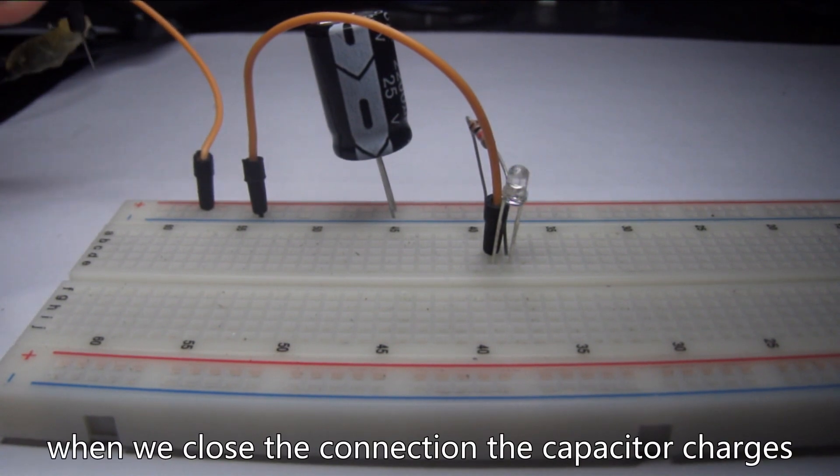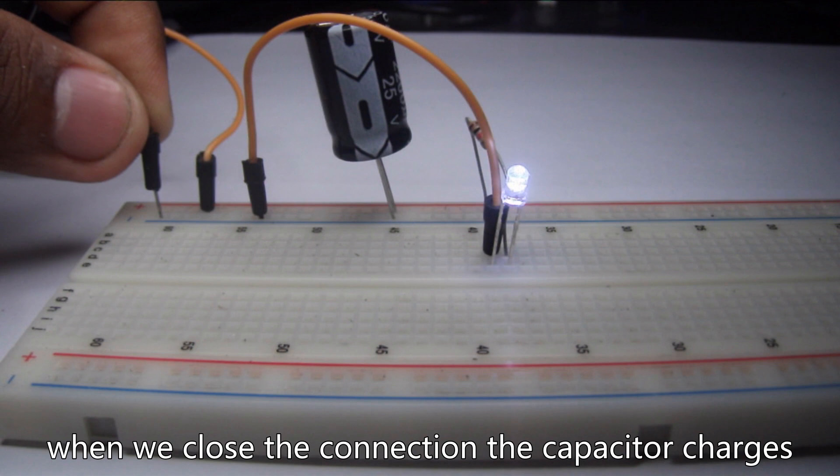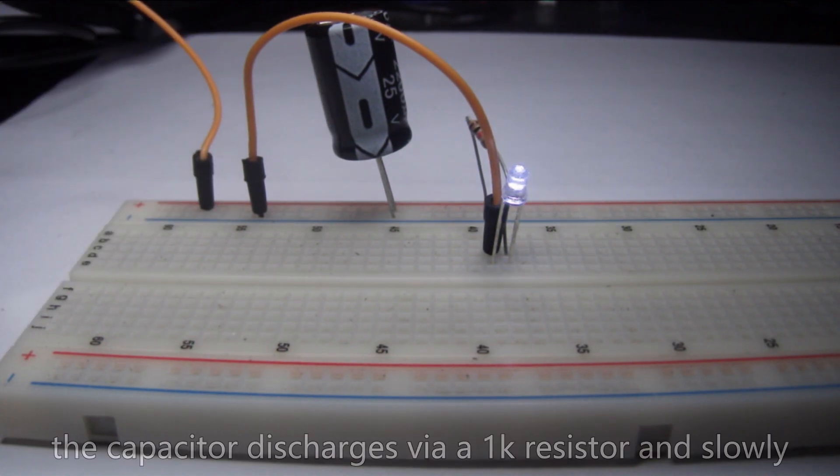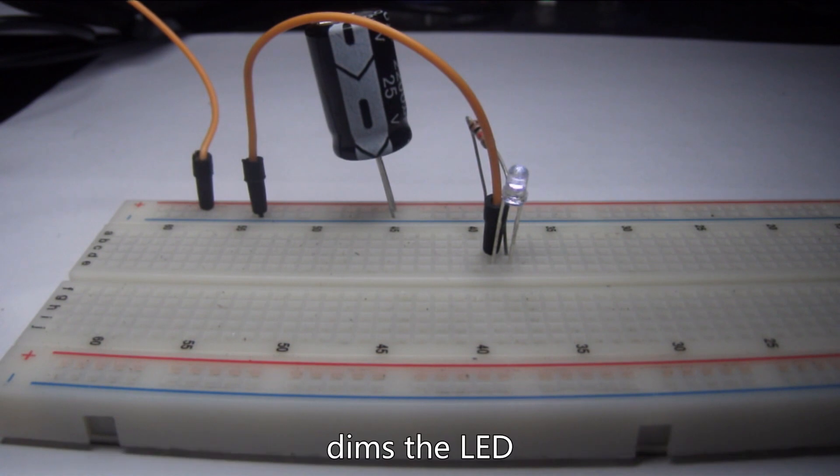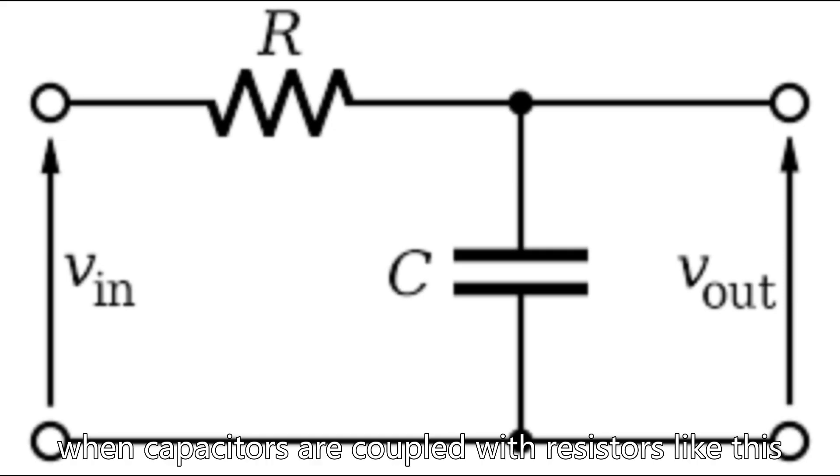When we close the connection, the capacitor charges. However, when we remove the power, the capacitor discharges via a 1k resistor and slowly dims the LED. When capacitors are coupled with resistors like this, they are known as RC circuits.